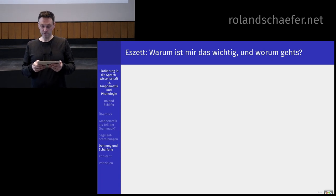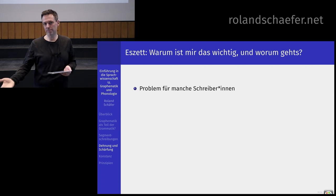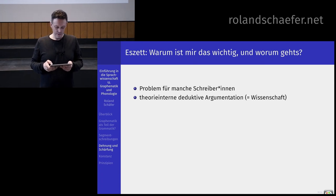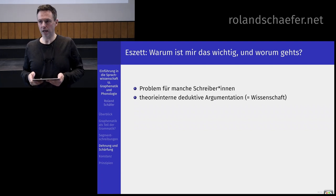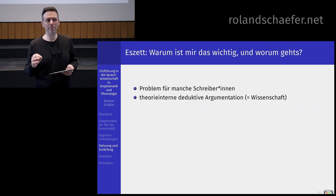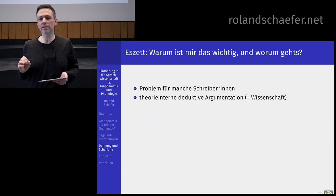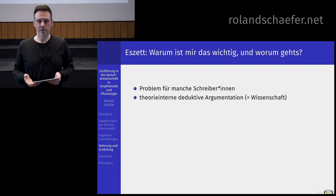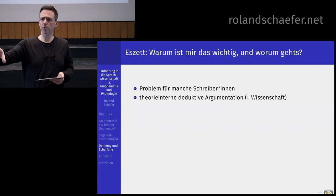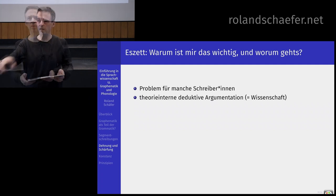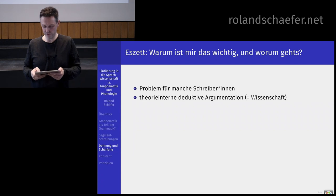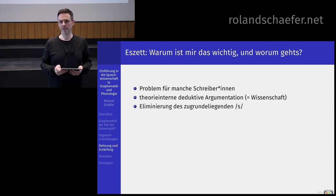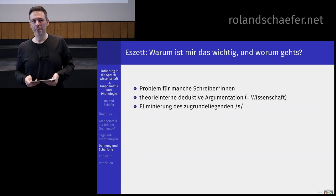Das hat jetzt was zu tun mit der Lösung für das SZ. SZ – warum ist das wichtig? Es ist ein Problem für manche SchreiberInnen im frühen Schreibungserwerb. Außerdem sehen Sie an meiner Lösung ein schönes Beispiel dafür, wie man theorieintern argumentiert – das ist eine deduktive Argumentation. Das heißt, wir haben vorher gesagt, das Silbengelenk sieht so aus, und dann gibt es Endrand-Desonorisierung, und daraus folgt dann das eine oder andere. Außerdem eliminieren wir das zugrunde liegende stimmlose S und retten damit die 1-zu-1-Korrespondenz bei der Konsonantenschreibung.